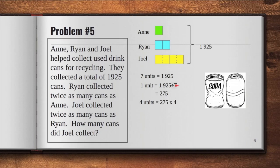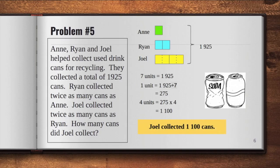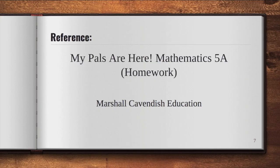Now, we are looking for the number of cans Joel collected. And we can see that Joel has four units here. So 275 times four will give us 1,100. Therefore, Joel collected 1,100 soda cans. This is the end of our lesson video. I hope you learned something from this. See you next time.